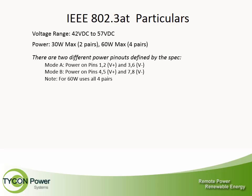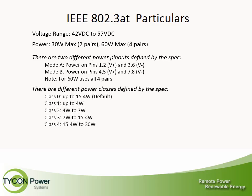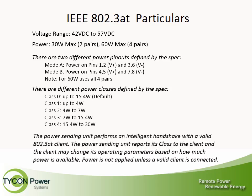For 60W, use all four pairs. Power classes for 802.3 AT: Class 0 up to 15.4W (default), Class 1 up to 4W, Class 2 from 4W to 7W, Class 3 from 7W to 15.4W, and Class 4 from 15.4W to 30W. The power sending unit performs an intelligent handshake with a valid 802.3 AT client, reports its class to the client, and the client may change its operating parameters based on available power. Power is not applied unless a valid client is connected.